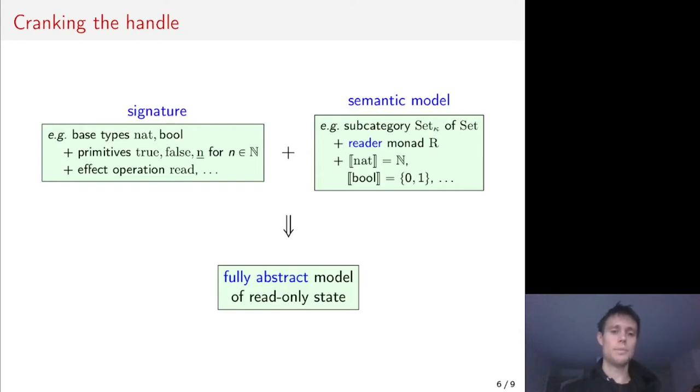For example, you might be interested in a language with natural numbers and booleans as the base types, together with primitives for true, false, the natural numbers, and operations for reading, boolean operations, and so on. A natural semantic interpretation for this is to use the reader monad on the category of sets, and then what our construction will yield from this is a fully abstract model of read-only state.